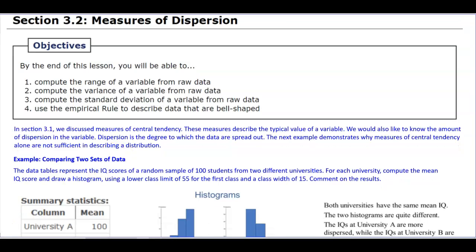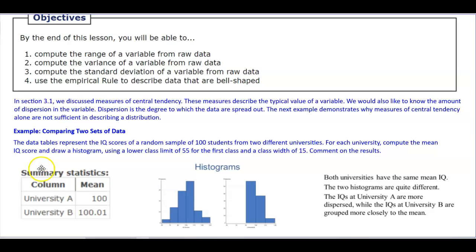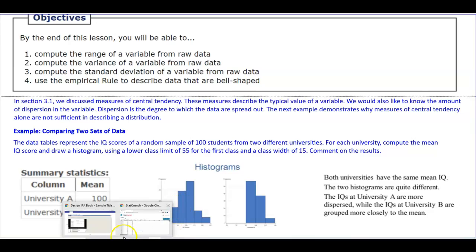For example, we have data, we're going to compare two different sets, and the data that's going to be in StatCrunch represent the IQ scores of a random sample of 100 students from two different universities. For each university, we want to compute the mean IQ score, and then draw a histogram using a lower class limit of 55 for the first class and a class width of 15, and then we're going to comment on the results.